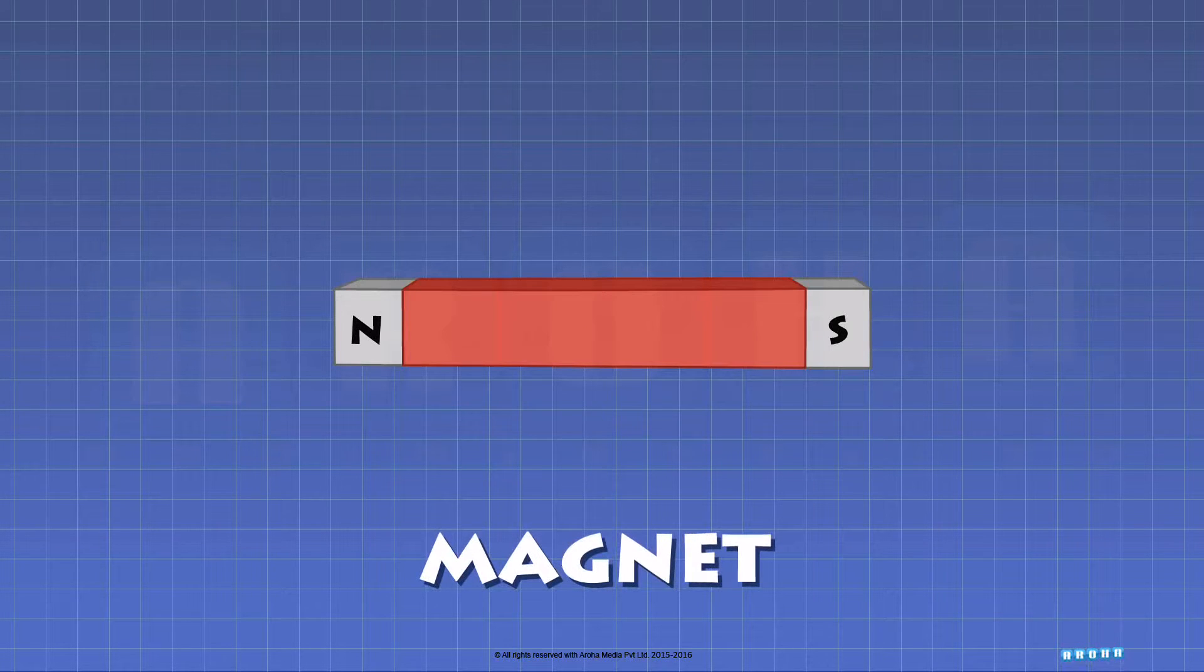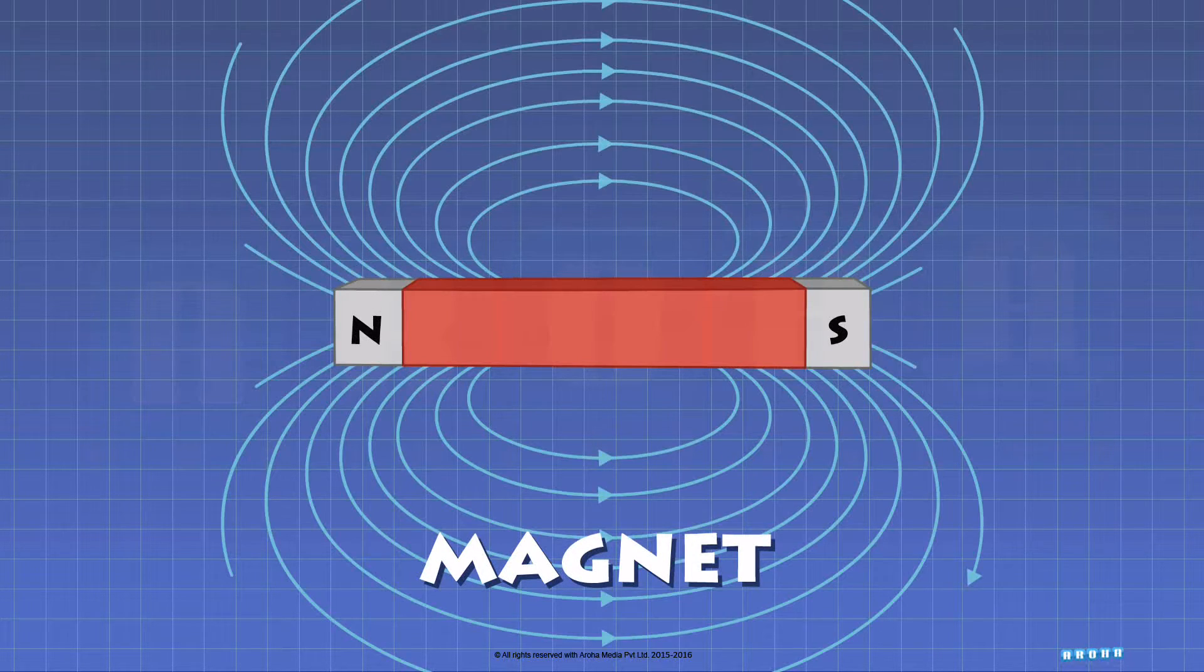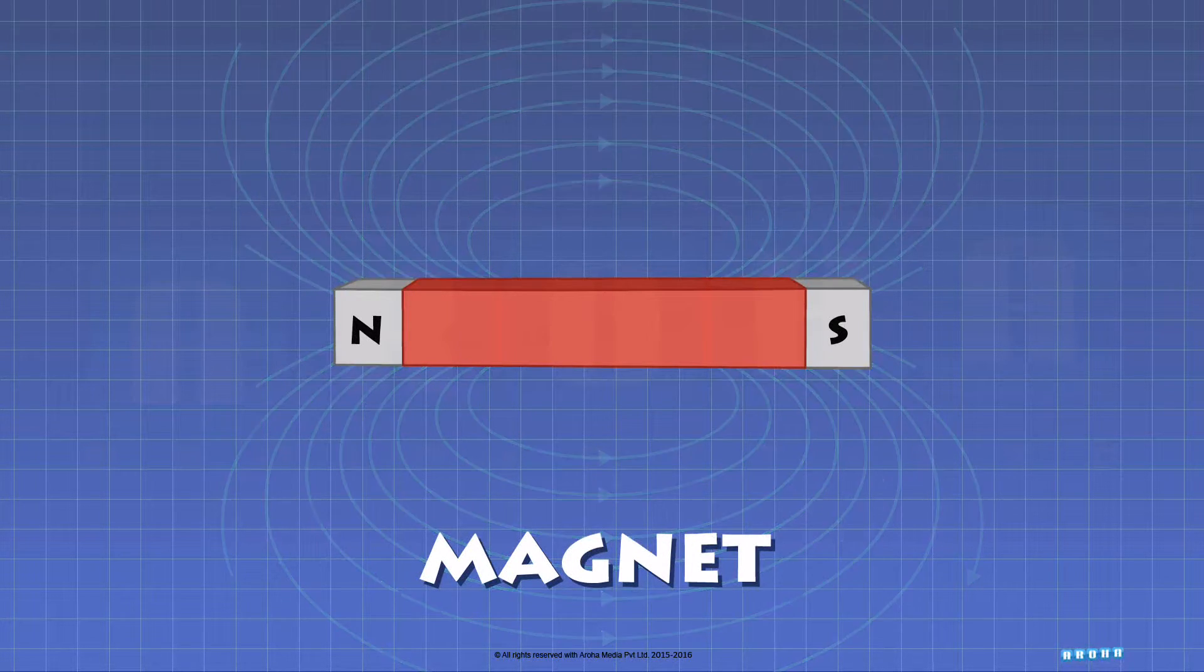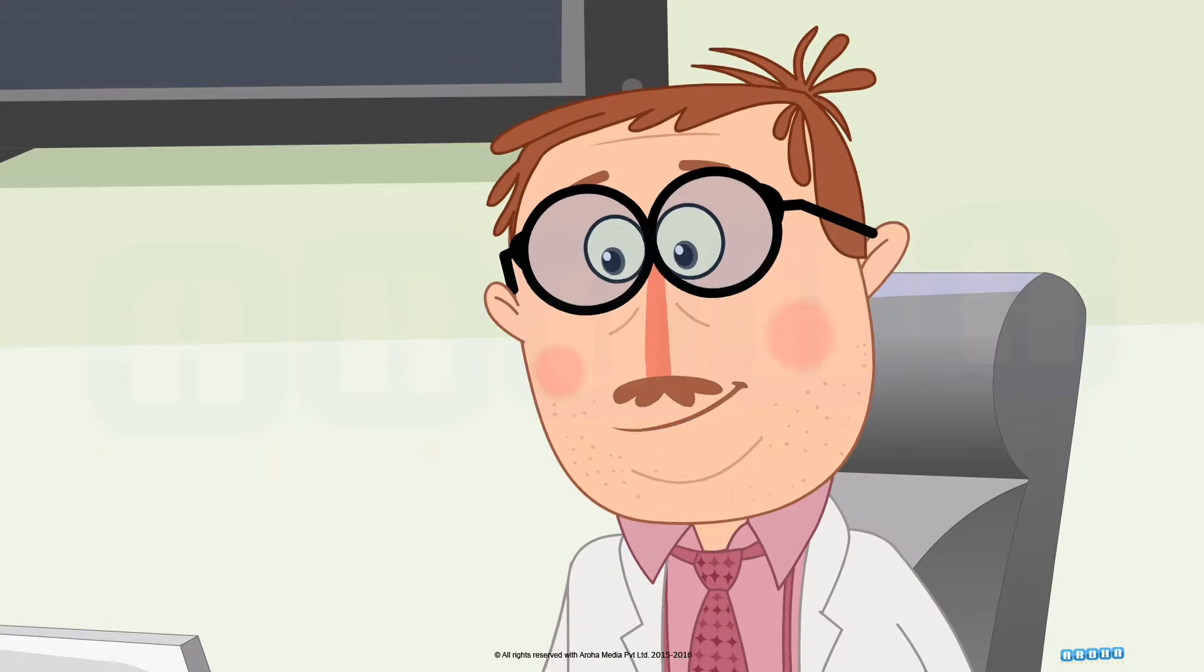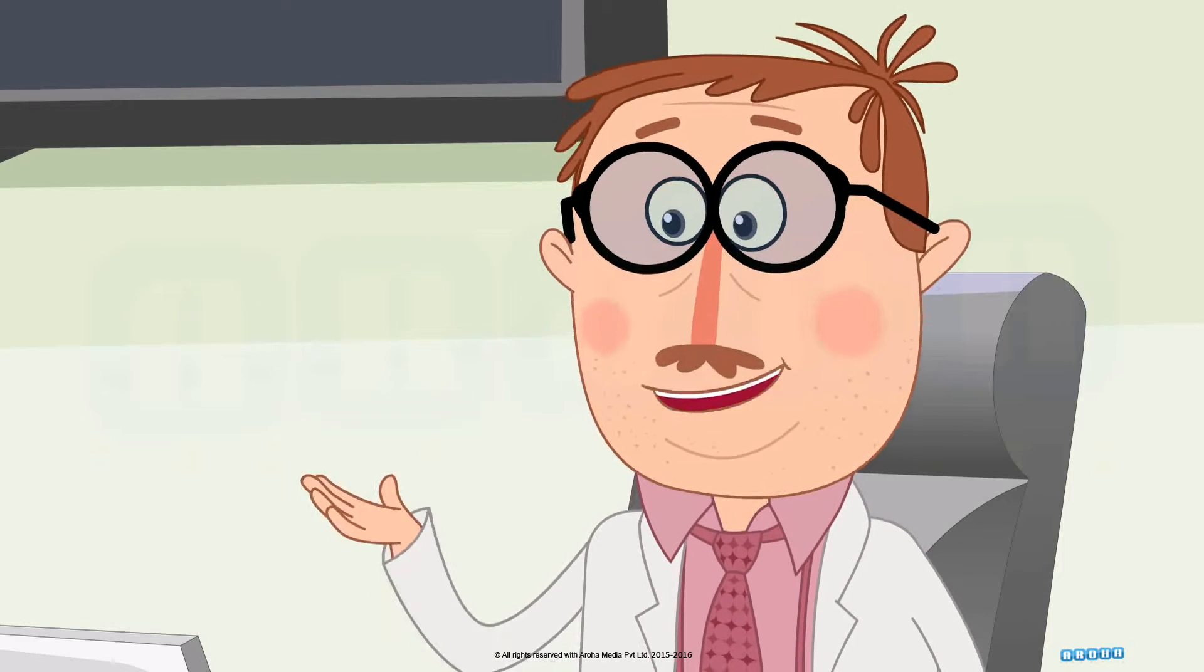A magnet is an object made of certain material which creates a magnetic field. Every magnet has two poles. One is called the North Pole and the other is the South Pole. You know, very interesting thing about magnets.